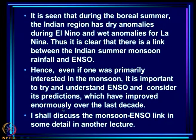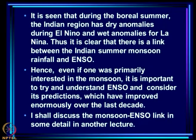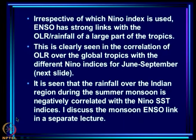It is clear that there is a link between Indian summer monsoon rainfall and ENSO. Hence, even if one is primarily interested in the monsoon, it is important to understand ENSO and consider its predictions, which have improved enormously over the last decade. Irrespective of which Niño index is used, ENSO has strong links with OLR or rainfall over a large part of the tropics, clearly seen in the correlation of OLR over the global tropics with the different Niño indices for June to September.